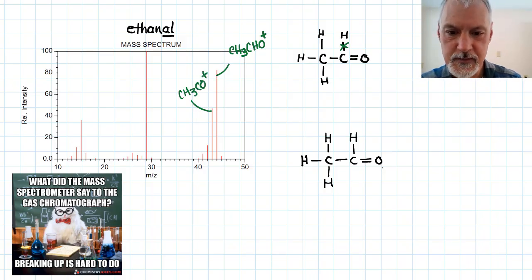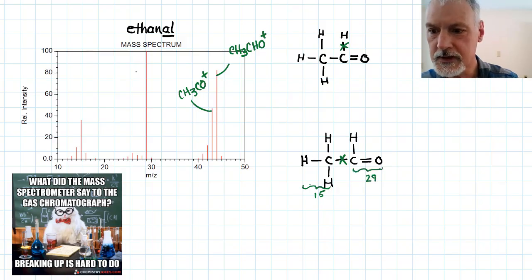Perhaps our species breaks right there, and that would give a 15, and this a 29. So the major peak that I see here would be due to the CHO fragment, and again, this small peak down here due to CH3.